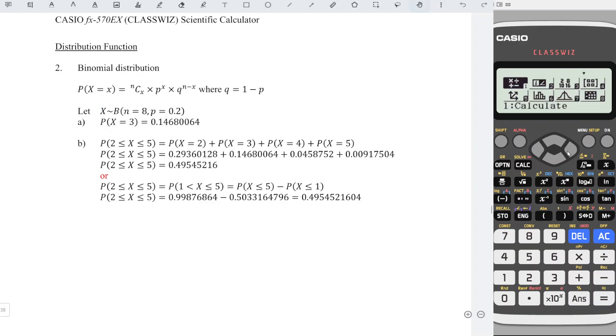First, press menu. Look for the seventh function, distribution. Choose 4, binomial pd, probability distribution. Since we are asked for only one value, which is x is equal to 3, choose 2, variable.